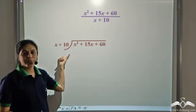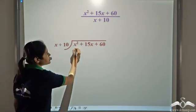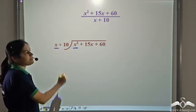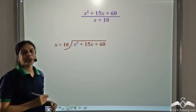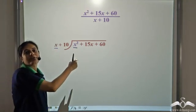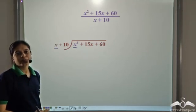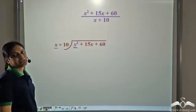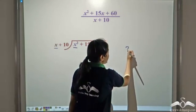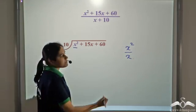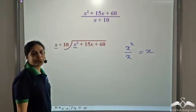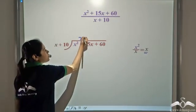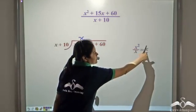Now let us start dividing. The first step is to consider the first term of the dividend and the first term of the divisor — that is x squared and x. We divide x squared by x to get x. This x becomes the first term of the quotient.